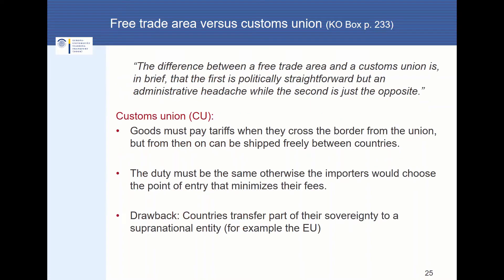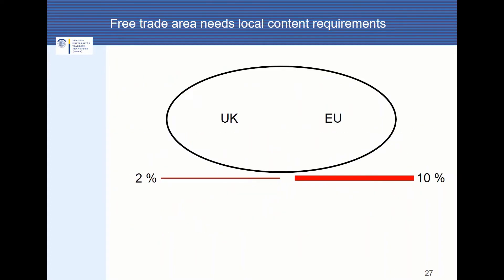What is the difference between a free trade area and a customs union? Some politicians say the difference is that the first is politically straightforward but an administrative headache, while the second is just the opposite. In a customs union, goods pay tariffs when they cross the border from outside the union, but can then be shipped freely between member countries. The duty must be the same for all countries — otherwise importers would choose the point of entry that minimizes their fees. This is highlighted on slide number 27.